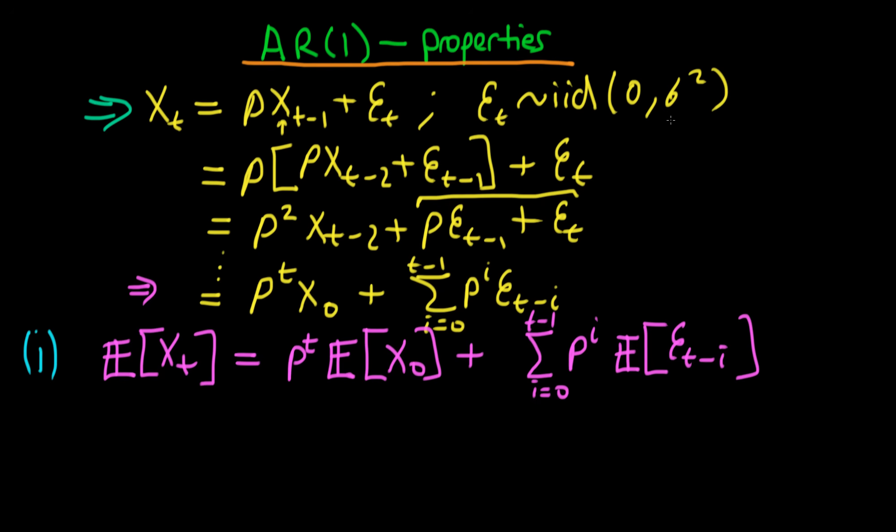Then we notice that the Et actually have a mean of 0, so the expectation of all of these terms is 0, so this second term disappears.